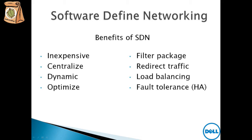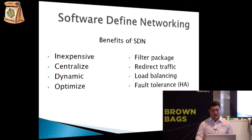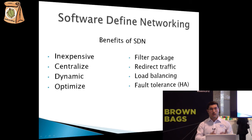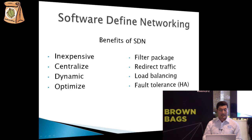Let's talk about the benefits of software-defined networking. SDN is inexpensive because we have the ability to run every single network device with features implemented in software. We have centralized control, so with a centralized brain we can calculate an optimum route for each flow. We have network optimization because we can utilize the network without sacrificing service quality. We can filter packets as soon as they get into the network, do micro-segmentation, modify packet headers, and redirect suspicious traffic to an IDS or IPS. We can also have load balancing and fault tolerance.